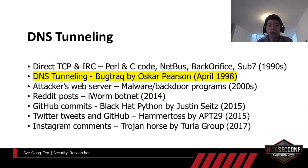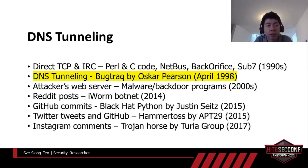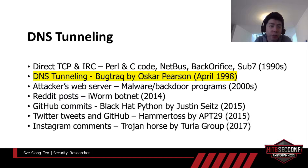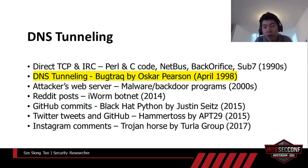Let's take a look at the timeline of different command and control channels used by threat actors in the last three decades. During the 1990s, there were many Unix hacking tools distributed in the form of postscripts and C source code, usually distributed on those FRAC magazine websites. Some of you might have heard of RAT tools like NetBus, Back Orifice, and Sub7.